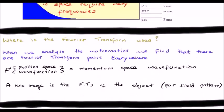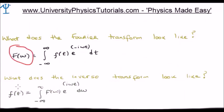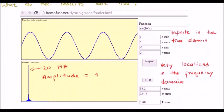The next thing we need to ask ourselves is where is the Fourier transform used? Well when we analyze the mathematics we find out that there are what are known as Fourier transform pairs everywhere. Now what's a Fourier transform pair? F of omega and small f of t are known as a Fourier transform pair. You could actually rewrite those two equations as a single equation which we will see later on. That should be pretty obvious and they would be Fourier transform pairs.